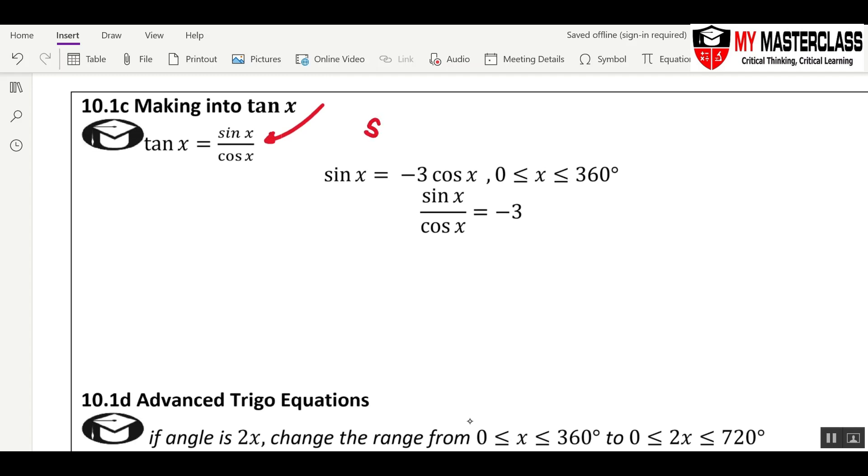Now, the question may start this way: sin x + 3cos x = 0. So when you see sine x and cosine x, and it must equal 0, we can form tangent.